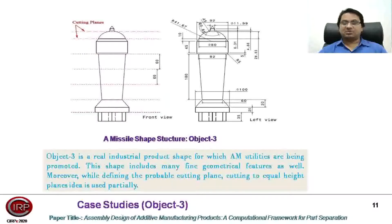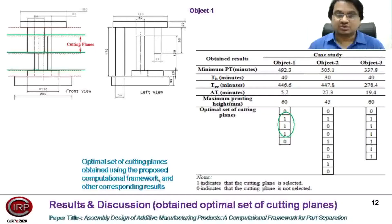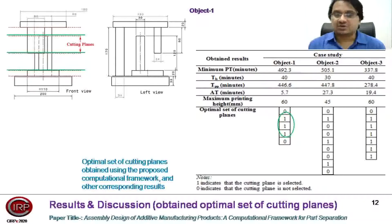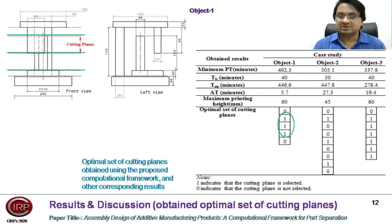Moreover, while defining the probable cutting planes, the cutting to equal height idea is partially utilized here. The results from the computational framework are shown in the form of minimum processing time, time spent in layer spreading, time spent in part printing, maximum printing height, and the optimal set of cutting planes for all three objects. For object one, five probable cutting planes exist but only three are selected. Similarly, in object two, three planes are selected, and in object three, out of seven, six are selected.